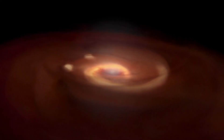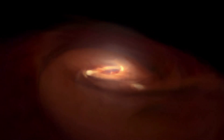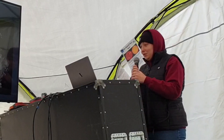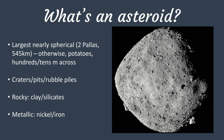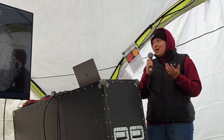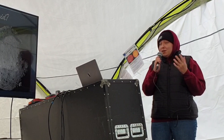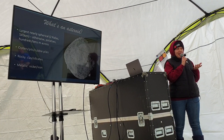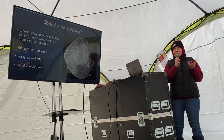In one sentence, an asteroid is a rocky or metallic, or sometimes rocky and metallic fragment, left over from the solar system's formation four and a half billion years ago. The largest are nearly spherical, like Pallas — that one is nearly spherical — otherwise they are basically potatoes. They can be hundreds of kilometers across, a few tens of kilometers in diameter, or down to basically tiny little stones.